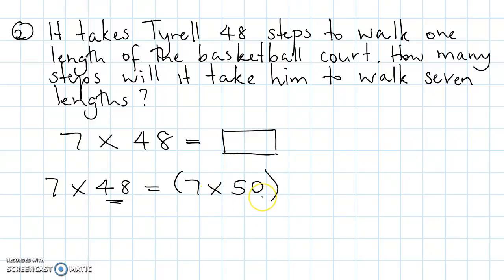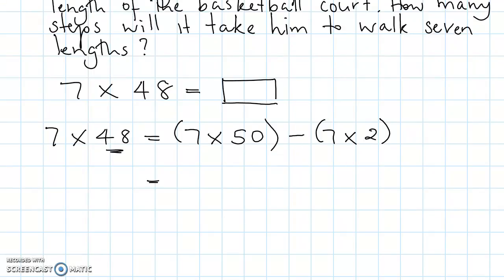And because we have added too much, we need to compensate. Take away 7 times 2. 7 times 50. I know 7 times 5 is 35. Because we are in the tens, it will be 350. Take away 7 times 2 is 14.